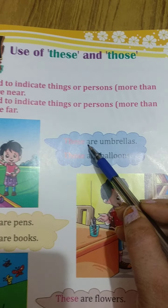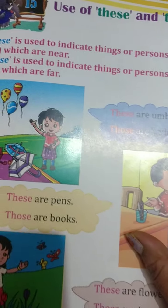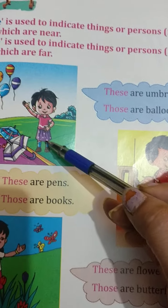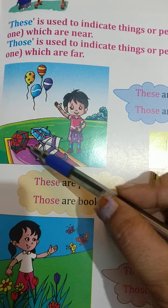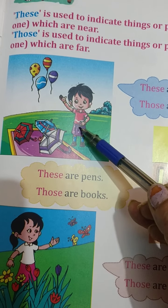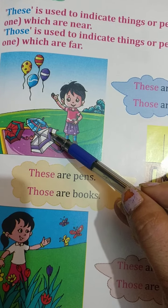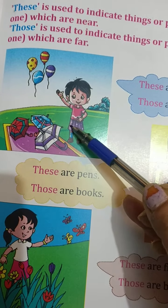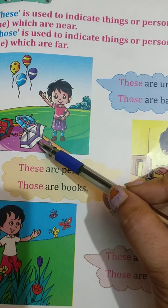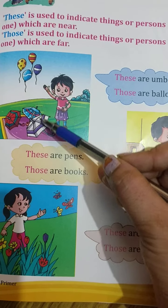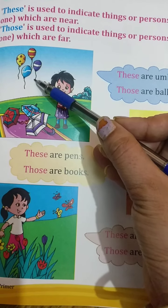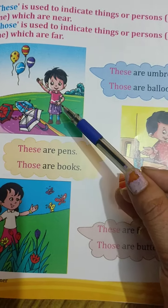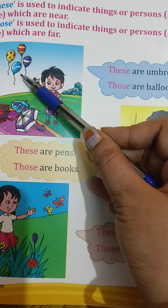Let's look at an example: 'These are umbrellas.' This indicates that the umbrellas are near to the girl and there is more than one. When objects are near and more than one, we use 'these.' Those are balloons — far from the girl and more than one — so we use 'those.'